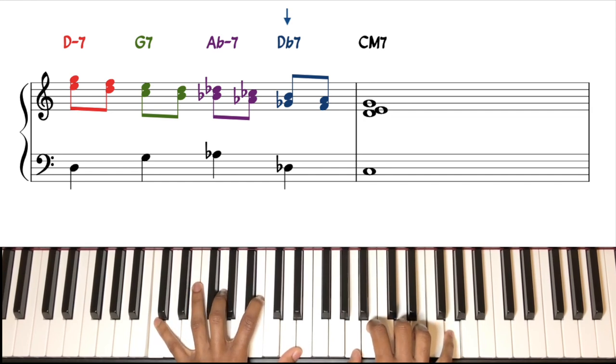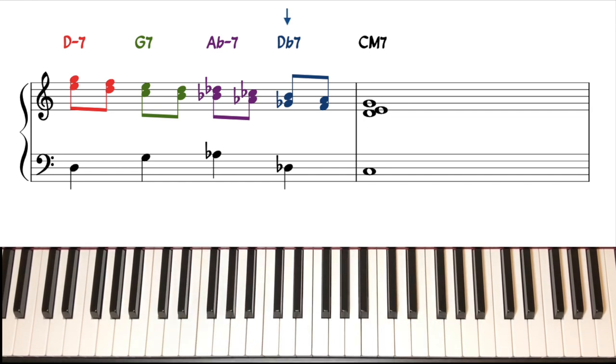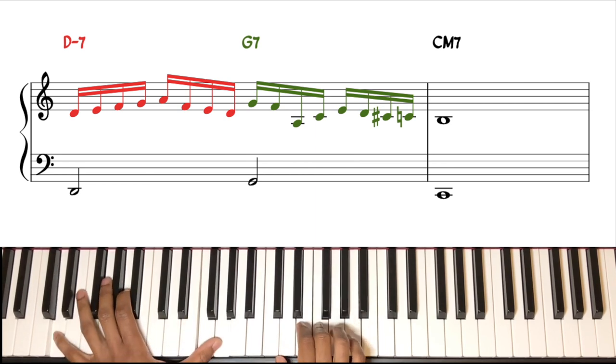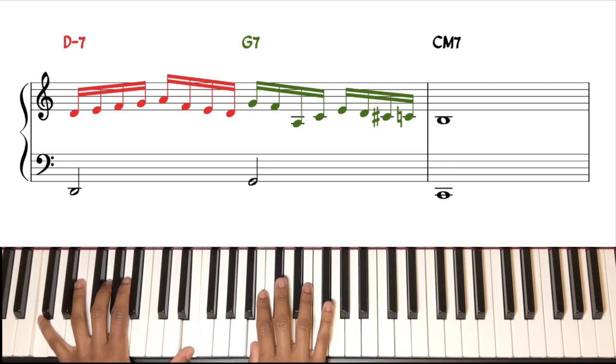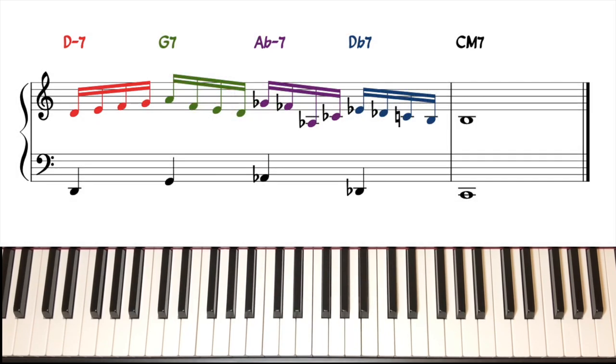And of course you can improvise using lines that you would do over 2-5-1, and then just modulate them to the dropped 2-5-1.